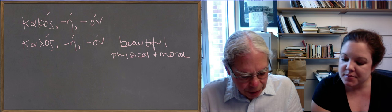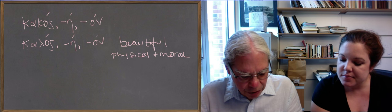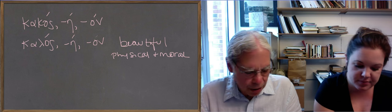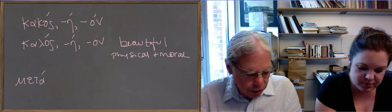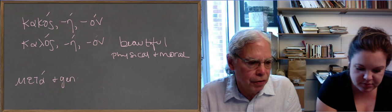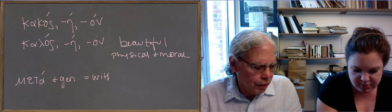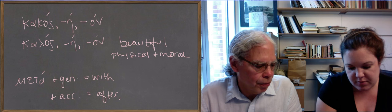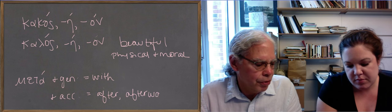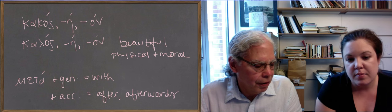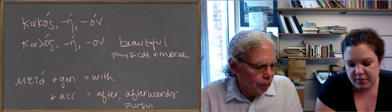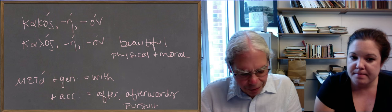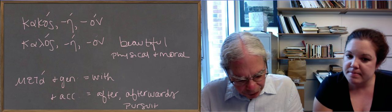The next word in the list is meta, the preposition, which takes two cases, both the genitive and the accusative. And with the genitive, it means with, and with the accusative, it means after in the sense of after in time. And you can also be in the sense of run after somebody. It does both of those kinds of after. In pursuit of, in other words. So the way you say afterwards in Greek is meta tauta, after these things, which is an accusative, for instance.